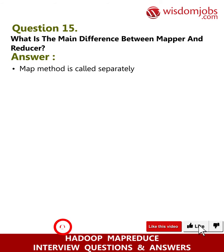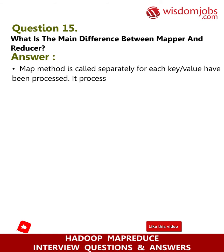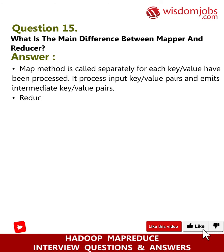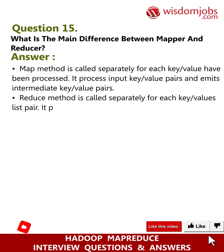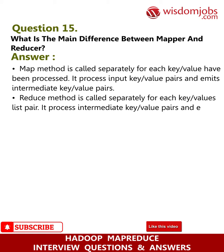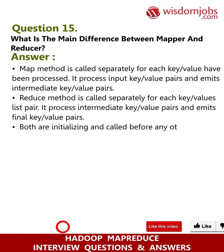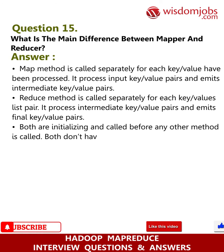Question 15: What is the main difference between mapper and reducer? Answer: The map method is called separately for each key/value pair being processed — it processes input key/value pairs and emits intermediate key/value pairs. The reduce method is called separately for each key/values-list pair — it processes intermediate key/value pairs and emits final key/value pairs. Both are initialized and called before any other method, and neither has parameters or output.